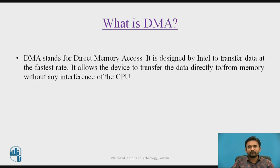What is DMA? DMA stands for Direct Memory Access. It is designed by Intel to transfer data at the fastest rate and it allows devices to transfer the data directly to or from memory without any interference of the CPU. In short, once we get permission from the processor, we can directly transfer our data from memory or to memory without the interference of the processor.